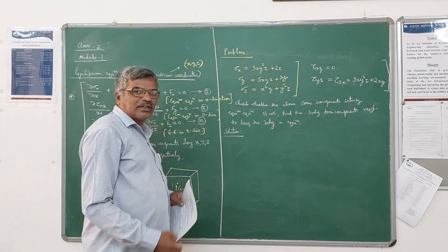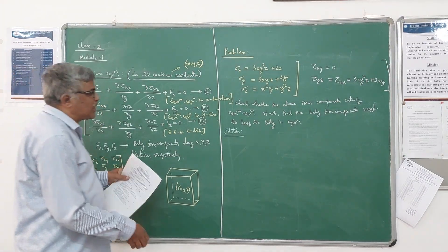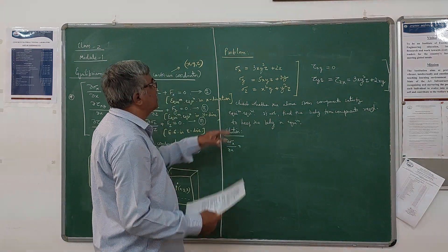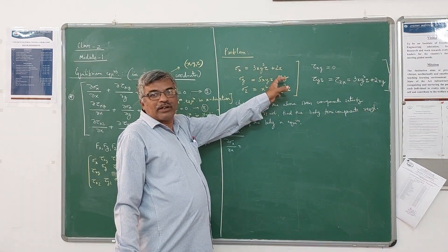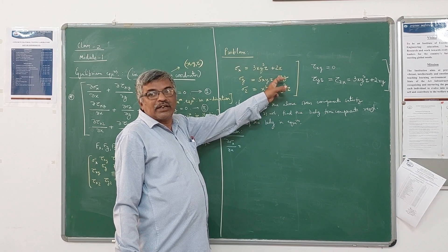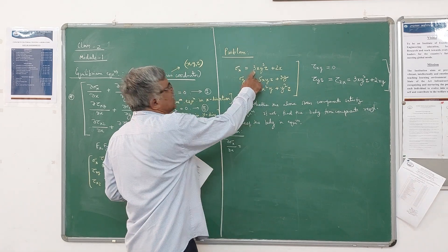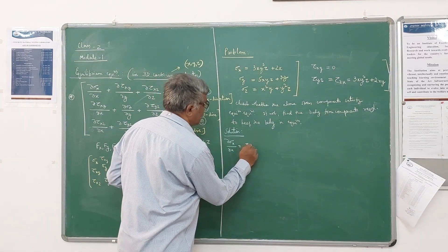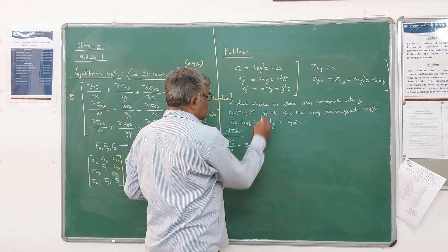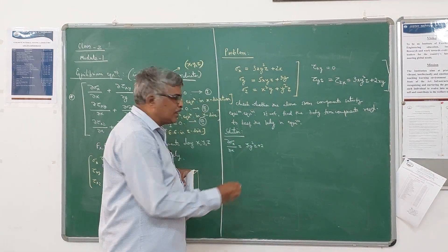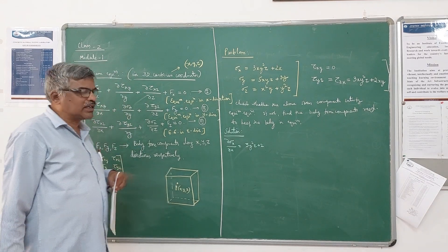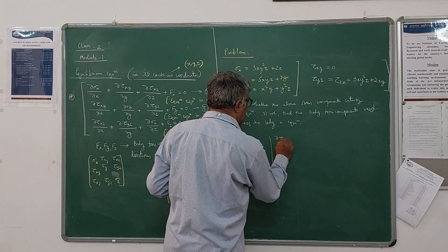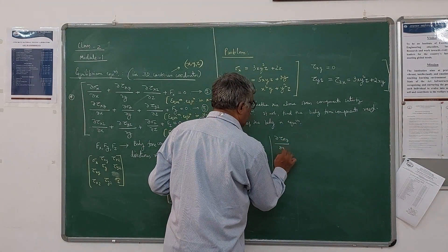Sigma X is given; we find ∂σ_x/∂x. Since Y and Z are treated as constants when differentiating with respect to X, the term 3x²yz differentiates to give 6xyz, and the term 2x gives 2. So ∂σ_x/∂x = 6xyz + 2. Next, ∂τ_xy/∂y: since tau XY = 0, this derivative is zero.